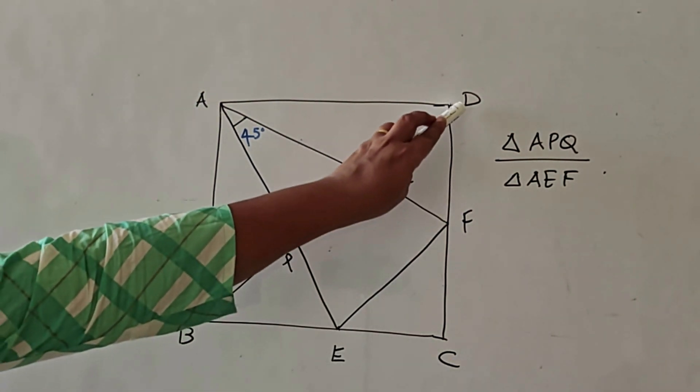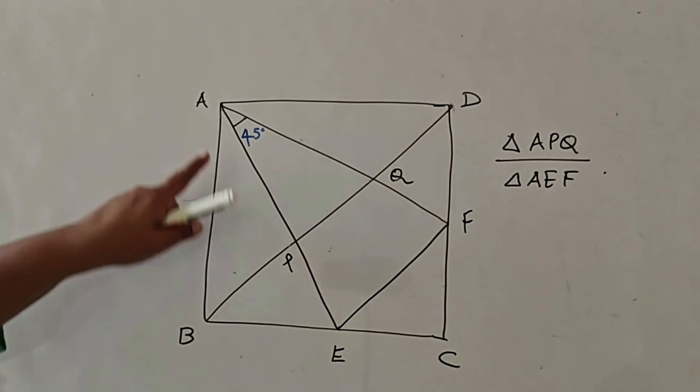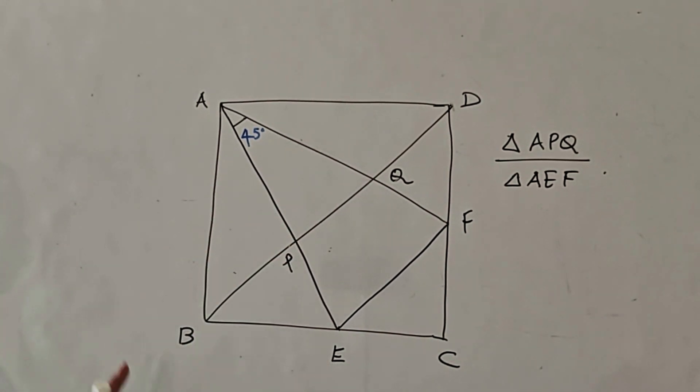A, B, C, D is the given square. E and F are two points which subtend an angle of 45 degrees at the point or the vertex A. P and Q are two points which are formed by the intersection of the line segments AE and AF with the diagonal BD.